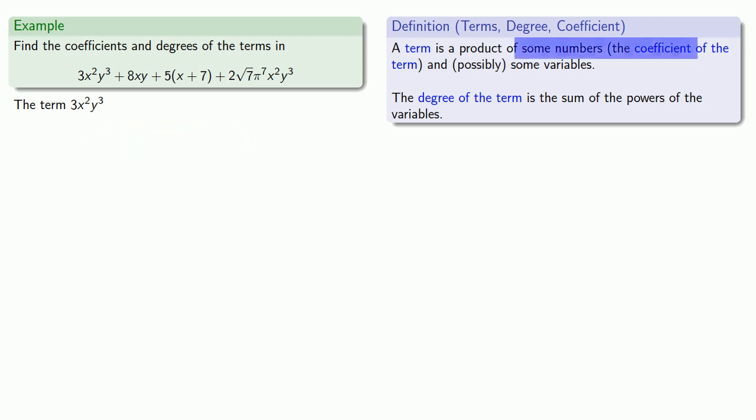The coefficient is the number that's being multiplied. So here, the number 3 is being multiplied. The degree of the term is the sum of the powers on the variables. That's x to the 2nd, y to the 3rd, so the degree is 2 plus 3, or 5. This next thing, 8xy, is a product of some numbers and some variables, so it's a term.